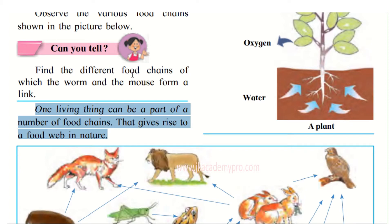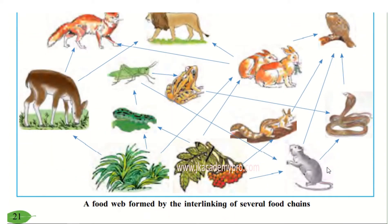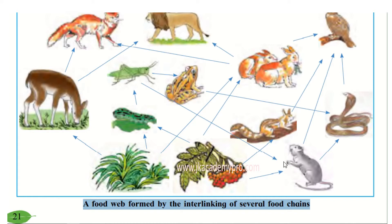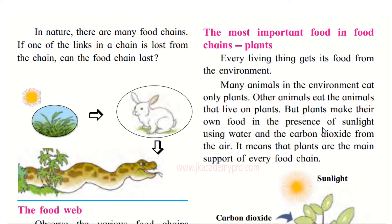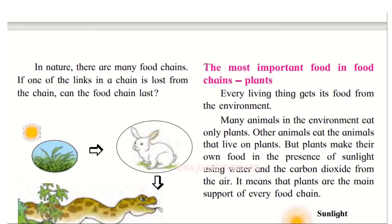To check your answer you could visit our website at www.jkacademy.com — you'll get the link in the description box below. A food web is formed by the interlinking of several food chains. A number of food chains together form a food web.